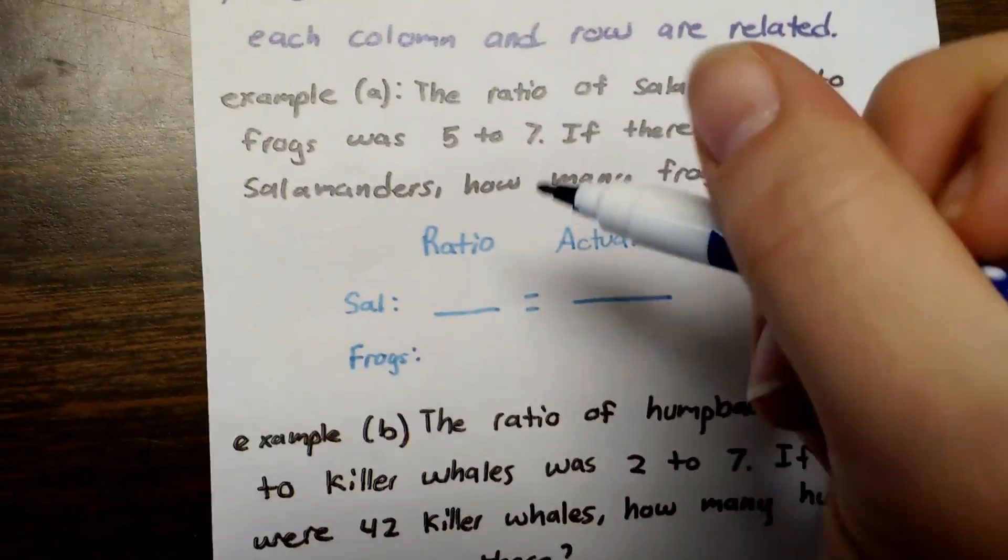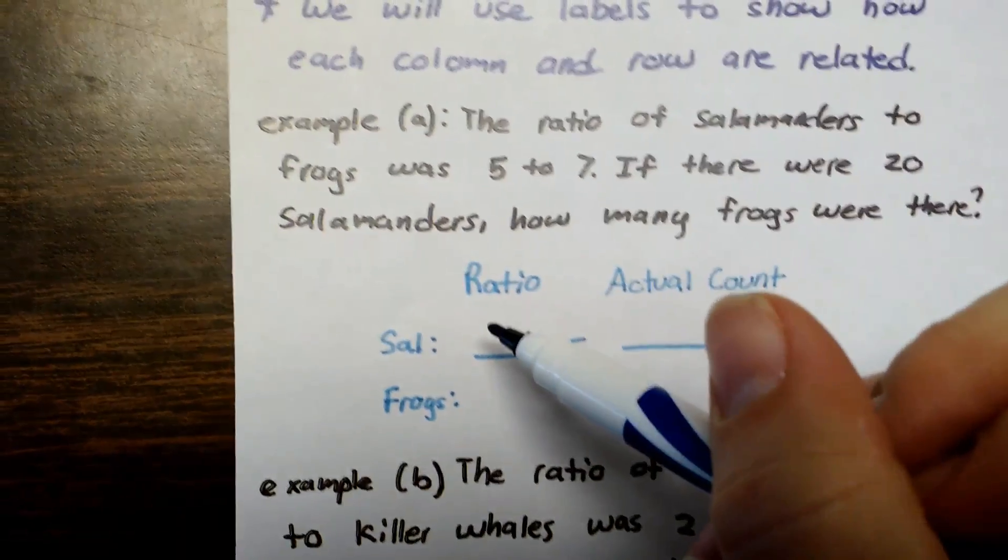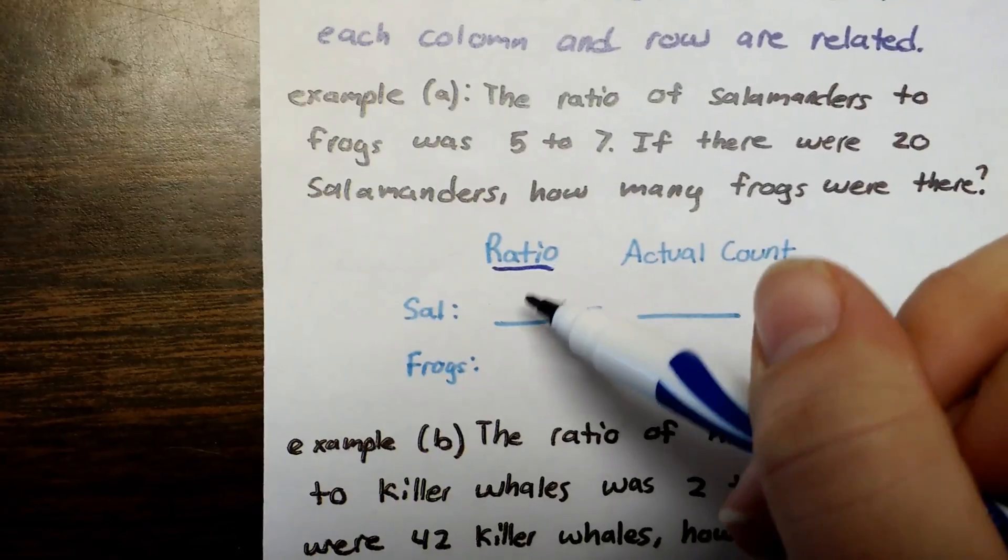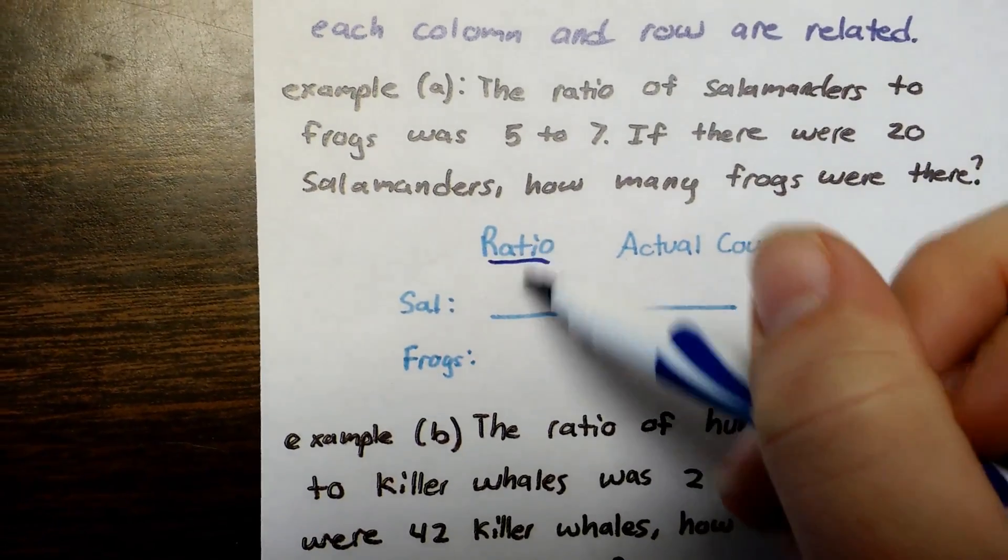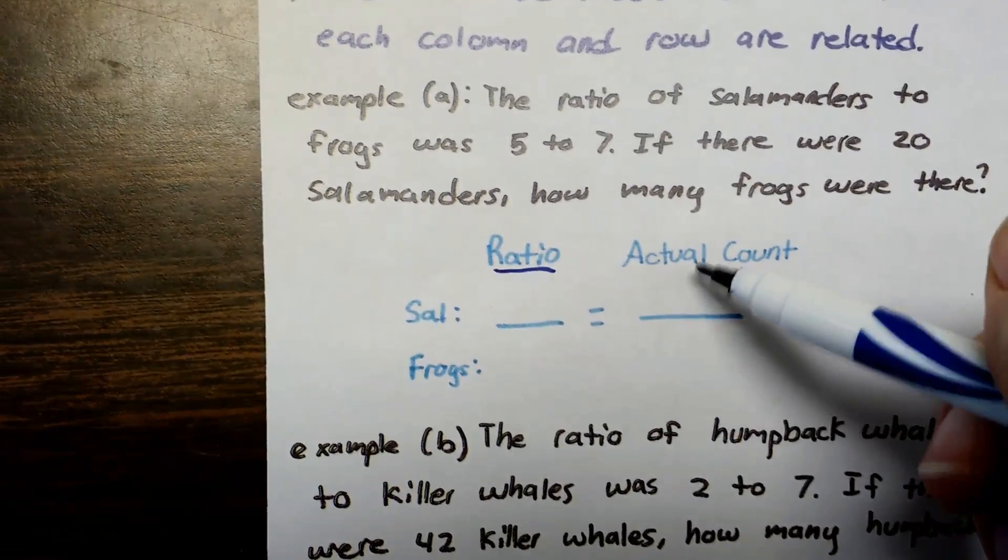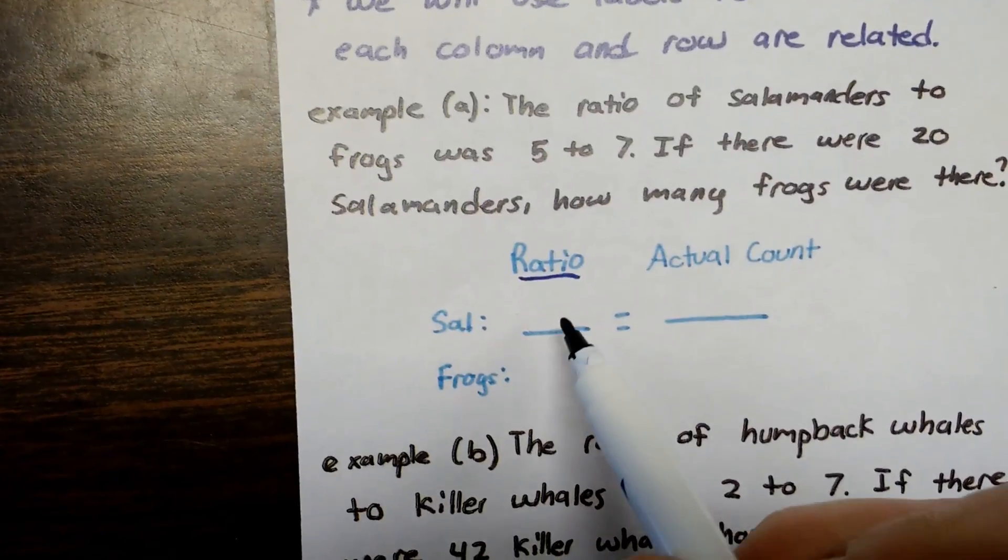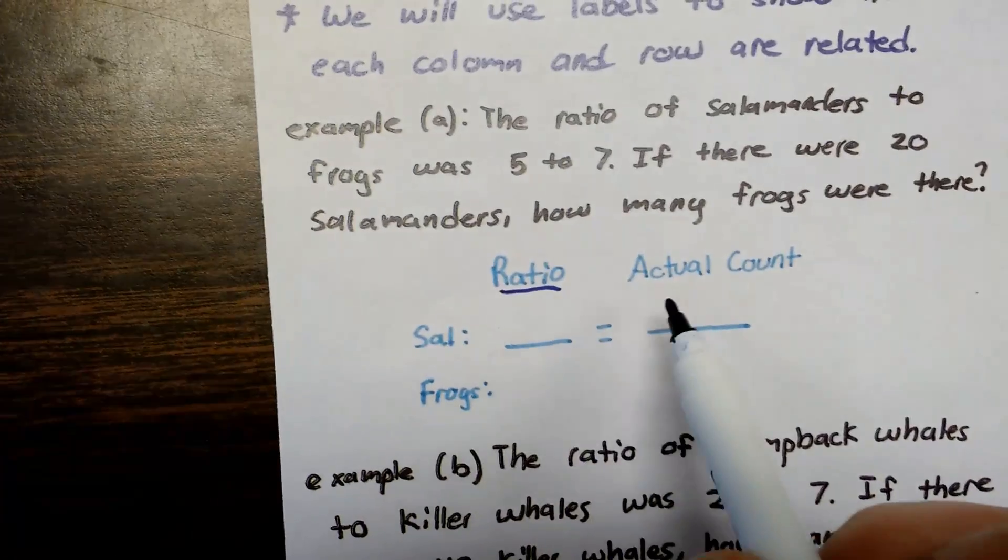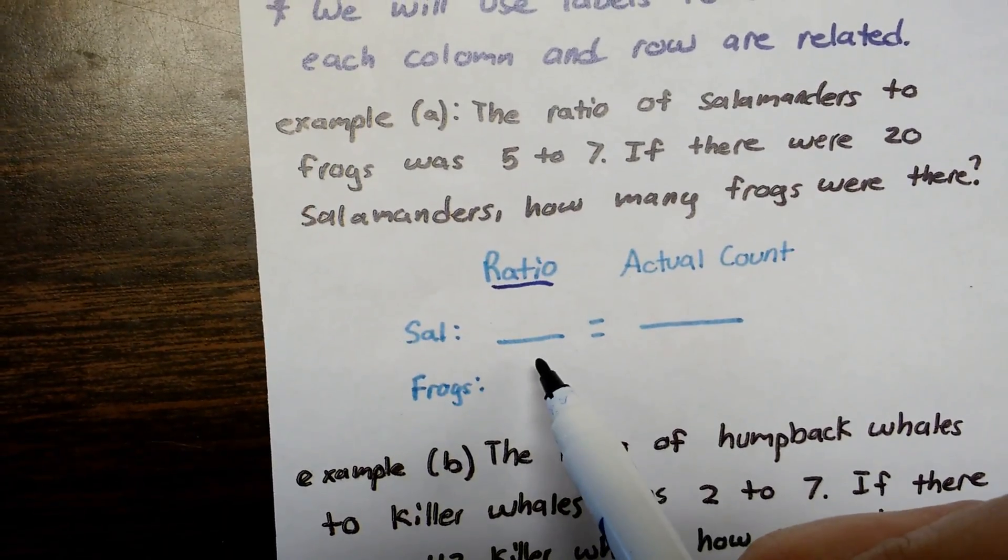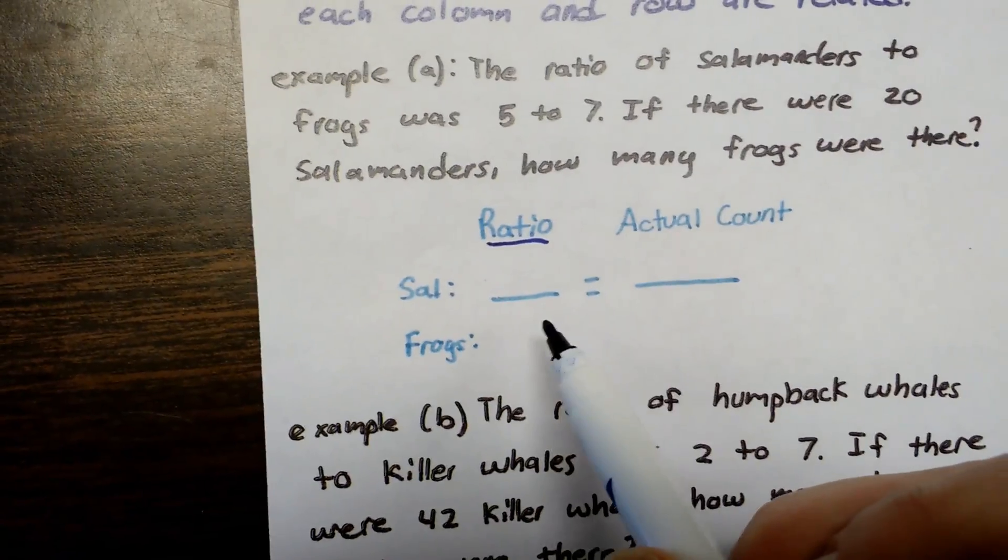Well here I have set up, I've labeled above it that this column is going to be the ratio and this column is going to be the actual. And then on this row we're going to put information about salamanders and on this row we're going to put information about frogs.